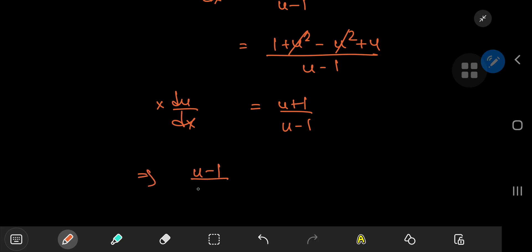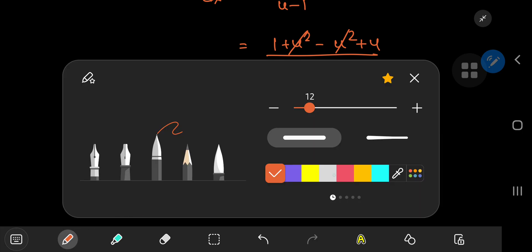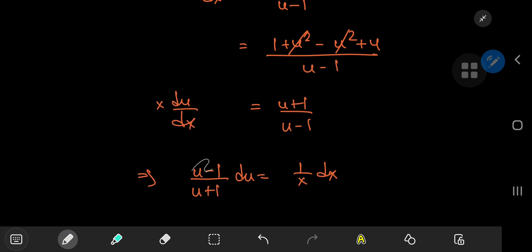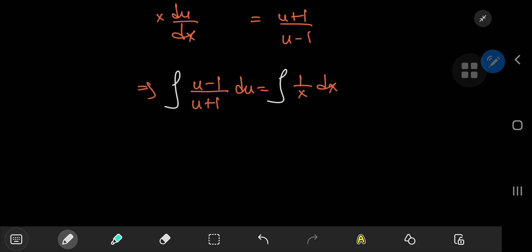So writing this as u minus one divided by u plus one du being equal to one by x dx. And integrating with respect to the variables on either side, that gives you log x plus the constant of integration on the right hand side.